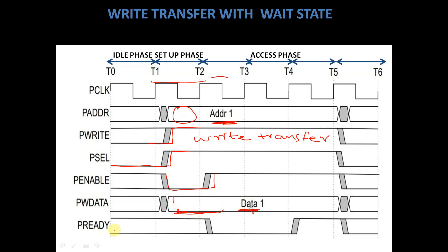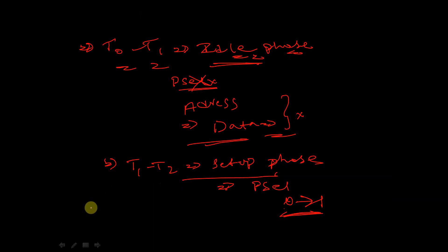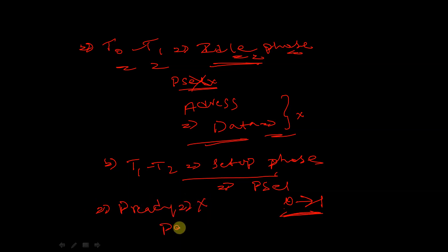We are getting data1 and Pready is still unknown in the setup phase. PEnable is 0 and Pready is unknown in the setup phase during T1 to T2.